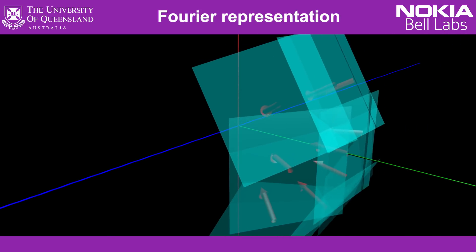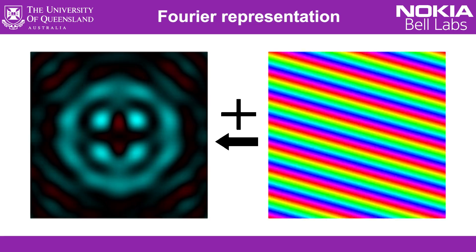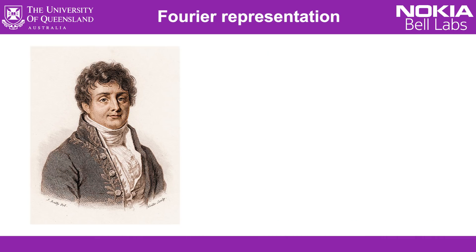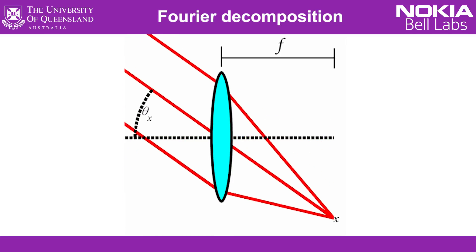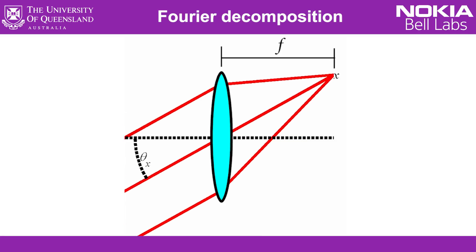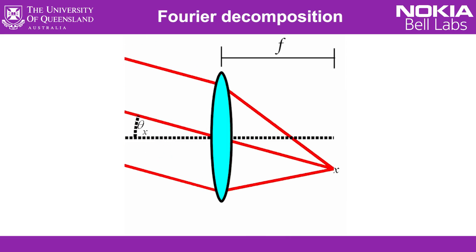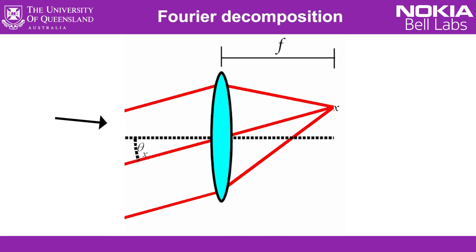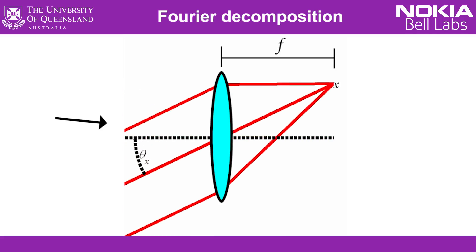Representing an image as a sum of these angle components, called the Fourier components — which is like the opposite of the pixel representation — is much better in a lot of scenarios. For instance, it's related to how JPEGs represent and compress images: even though an image has a lot of pixels, you can describe it with relatively few tilted angle waves, and hence store it as a small file. If we want to split up an image into these Fourier components, that's actually pretty easy, because that's what a lens does. A lens converts positions, like pixel positions on one side, to big tilted waves travelling at a specific angle on the other — so position on one side sets the angle on the other, and vice versa.